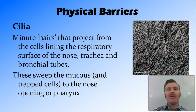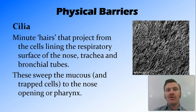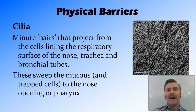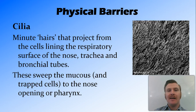Another physical barrier that works with the mucous membranes is cilia — minute hair-like cells that project from the lining of the respiratory surface, including the nose, trachea, and bronchial tubes in the lungs. Like a carpet with a grain pointing in one direction, these cilia all point towards the outside of the body. As a pathogen comes inside, it gets caught in the mucus, and that mucus is then swept by the cilia out of the body.